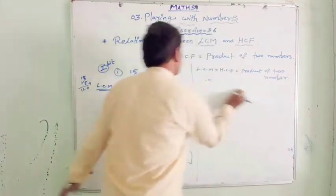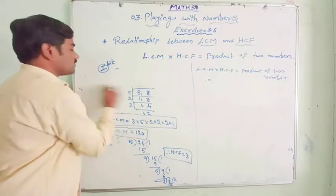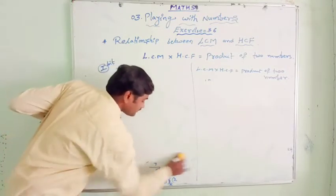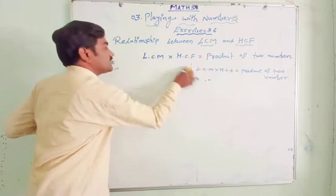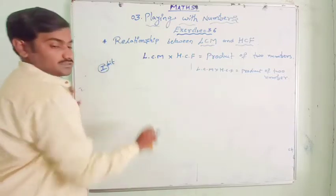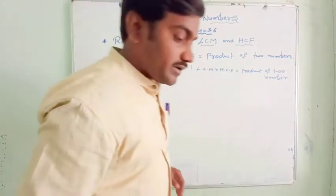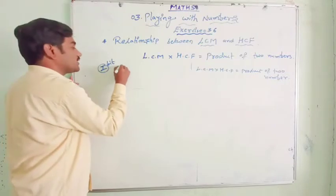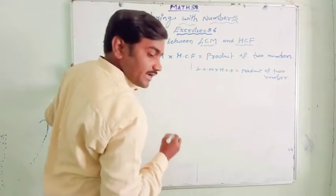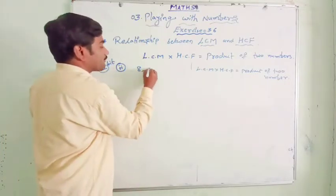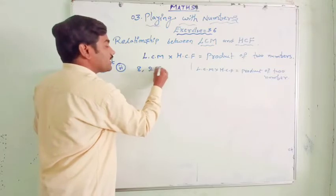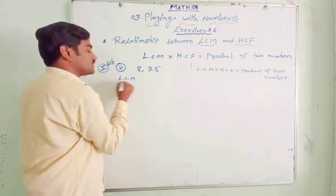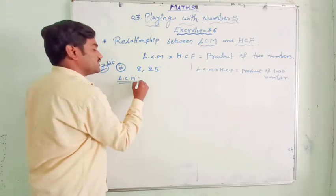We can also check by taking other numbers from the same exercise. There are 3 problems. Let us go for the second problem, which is 8 and 25. Let us find out the LCM of 8 and 25 by the division method.